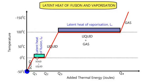Now, the specific latent heat of fusion is the latent heat of fusion per kilogram. Similarly, the specific latent heat of vaporization is the latent heat of vaporization per kilogram.